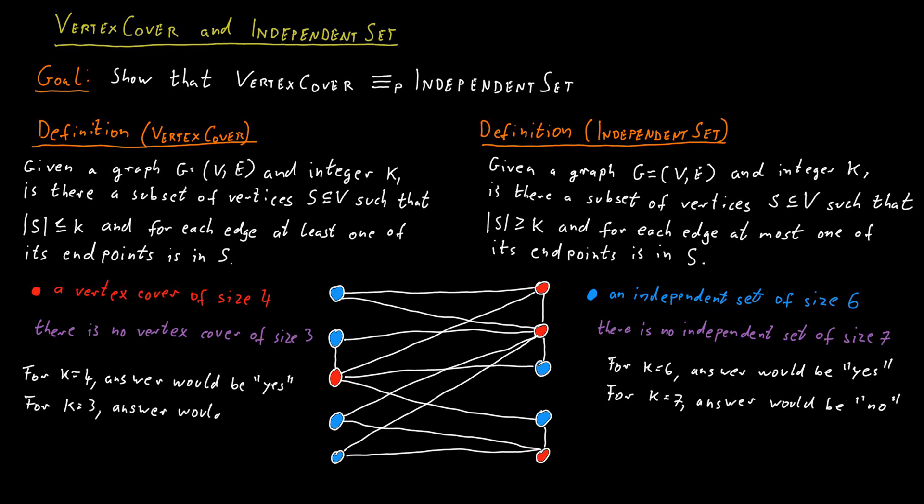The reduction between these two problems in both directions relies on their close relationship. If we have a subset S that is an independent set, then the complement V minus S is a vertex cover. Conversely, if S is a vertex cover, then V minus S is an independent set. This establishes the key relationship: if we have an independent set, taking all the vertices we didn't select gives us a vertex cover.